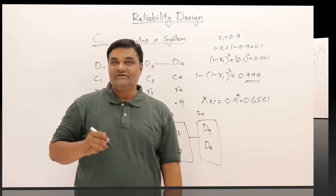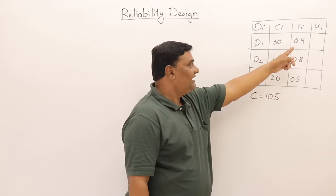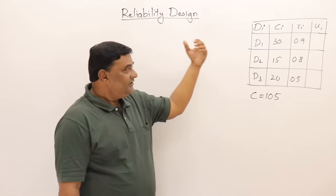Here is an example: I have three devices. The costs of the devices are 30, 15, and 20 dollars, and the reliabilities are 0.9, 0.8, and 0.5. There is also an upper bound, u_i, for each device — let us understand what that means.